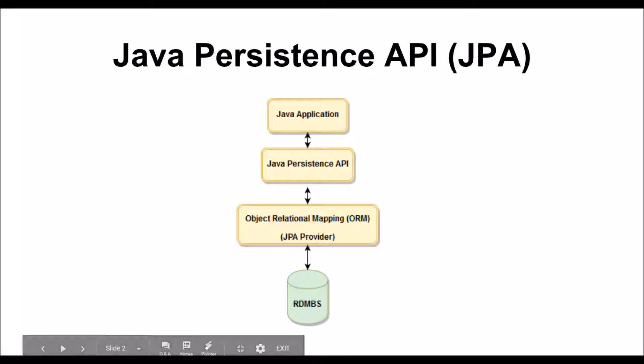JPA stands for Java Persistence API and it is a Java specification that helps us to manage data and store them in a permanent way in a database. It supports all CRUD operations on the database — create, delete, update, read — and also the implementation of typical relationships in the relational database world, such as one-to-one, one-to-many, many-to-one, many-to-many, and so on.